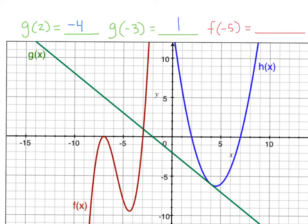Let's look at f of negative 5. That's saying when x is negative 5 on f of x — on the red line, not the green one — what is y? When x is negative 1, 2, 3, 4, 5, we go down until we hit the graph. I go down 1, 2, 3, 4, 5, 6, 7, 8 — I've hit the graph. At negative 5, I had to go down 8, so f of negative 5 is negative 8.